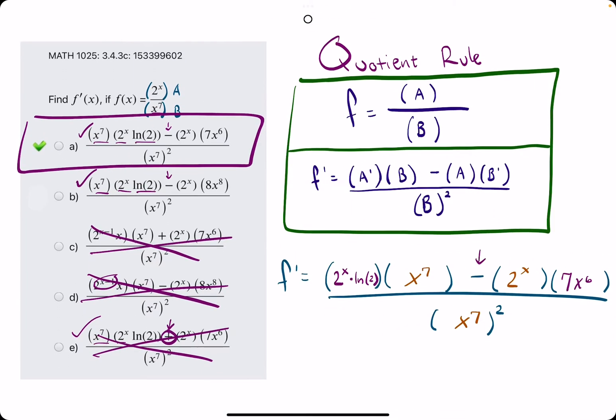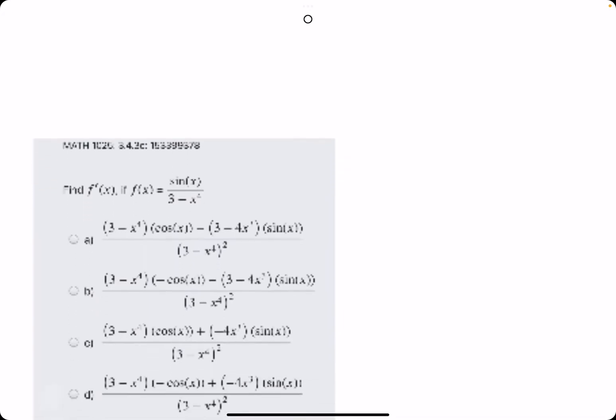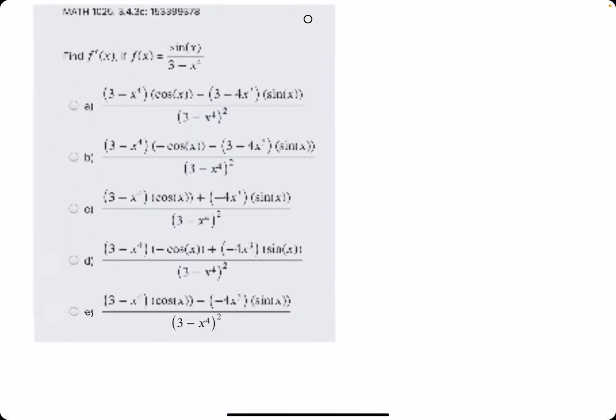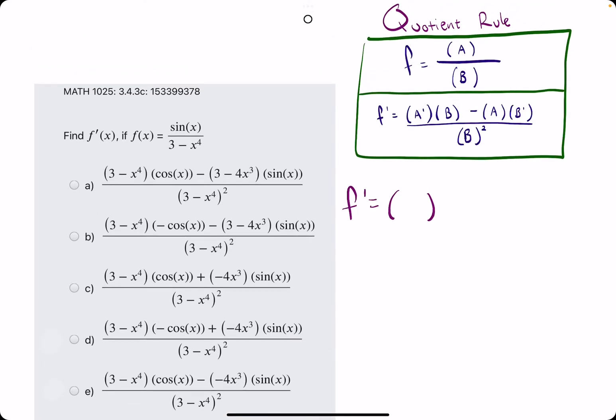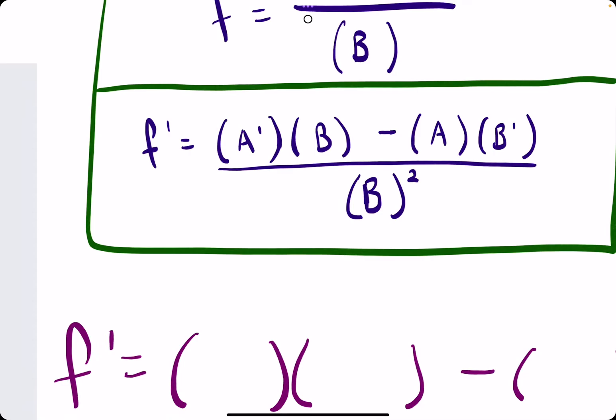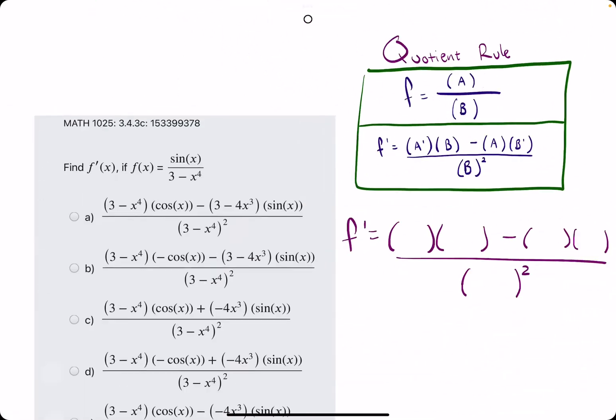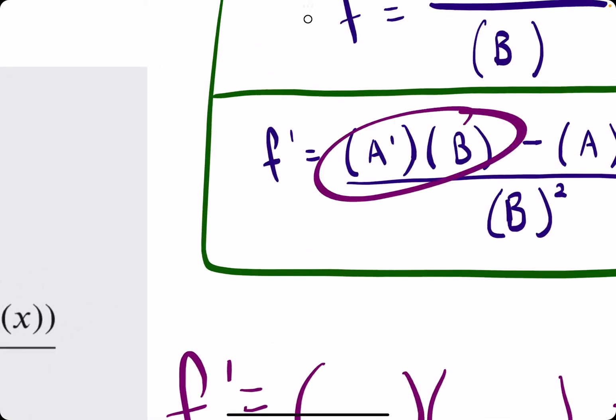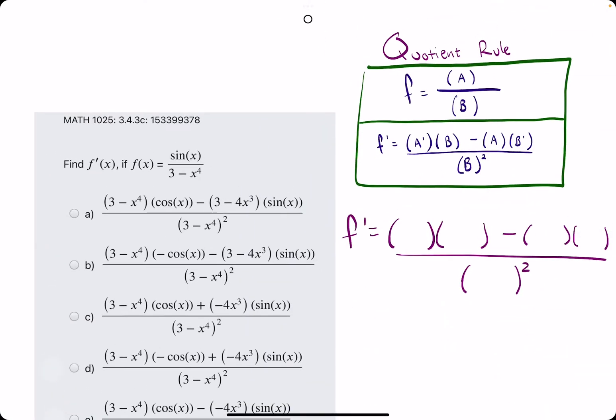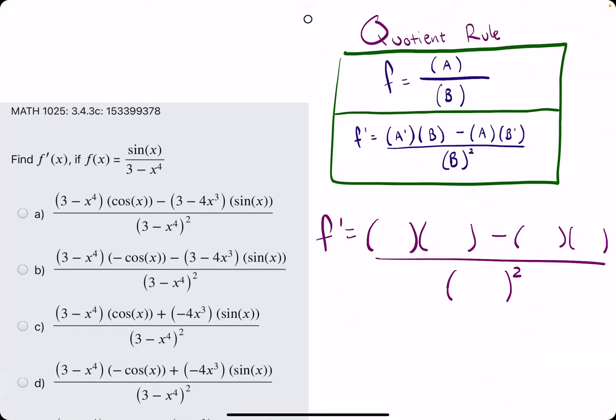This is kind of an intro to quotient rule. Now, let's do a couple more examples much faster. Jumping right into it, we always start quotient rule and product rule with f prime. Product rule, you could start with any of those terms since it's separated by addition. But keep in mind, quotient rule, the order matters. We must start with A prime times B first.